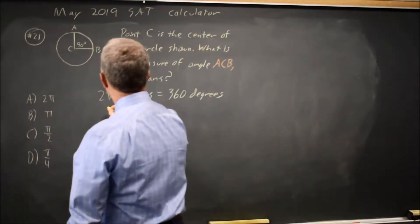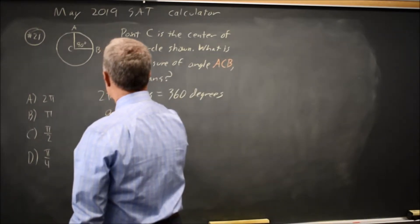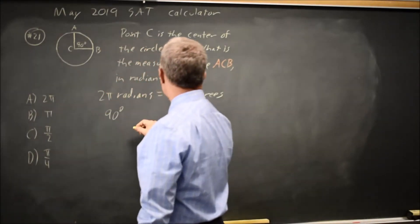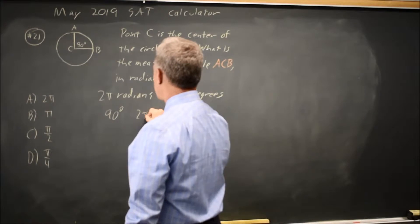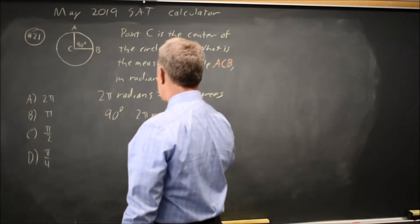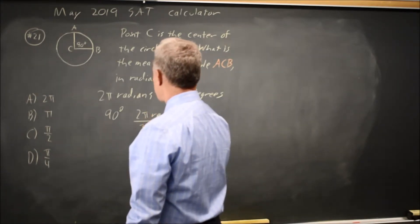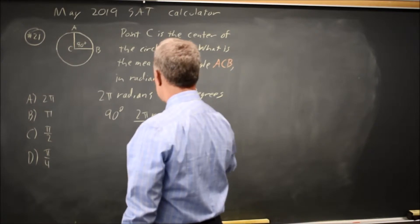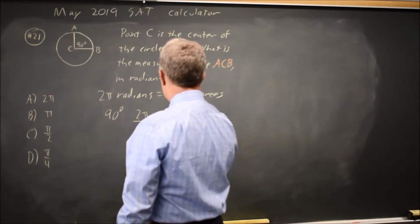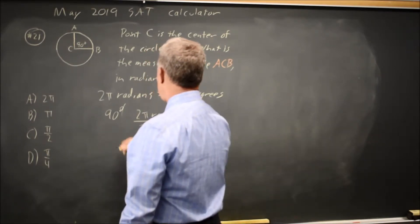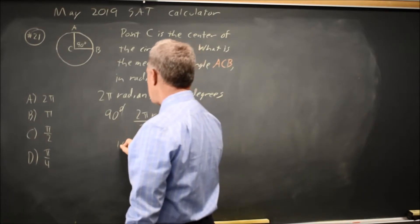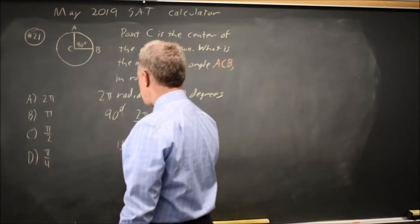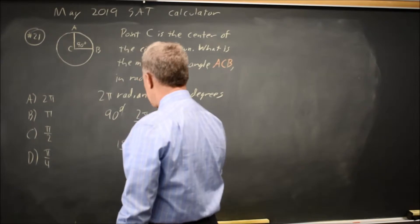So we can multiply 90 degrees by 2 pi radians over 360 degrees. The degrees cancel and I'm left with 90 times 2 is 180 times pi over 360 in radians.